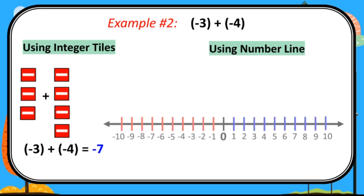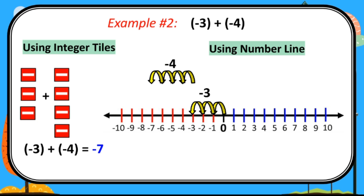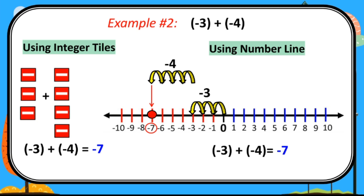Using number line: the first addend is negative 3, so we move 3 units to the left starting from 0 — 1, 2, and 3. The next addend is negative 4, so we start from where we ended and move 4 units to the left — 1, 2, 3, and 4. The corresponding integer is negative 7. Therefore, negative 3 plus negative 4 equals negative 7. Same answer as the integer tiles.